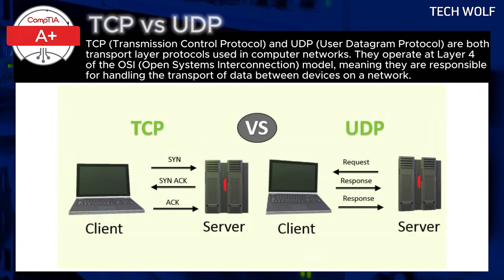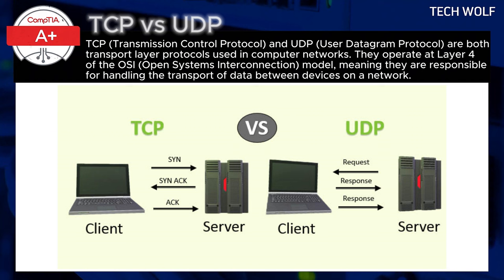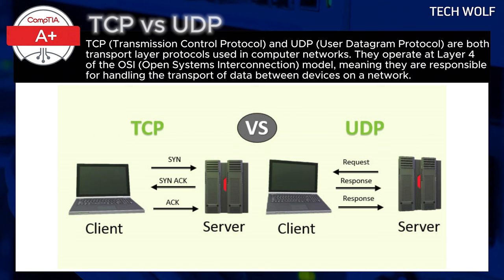UDP, or User Datagram Protocol, on the other hand, is a connectionless protocol. This means there is no handshake or formal connection setup before data starts flowing between two devices. UDP just sends packets, known as datagrams, to the receiver, but it doesn't check if they arrive in the correct order or even if they arrive at all. Because UDP doesn't have the overhead of setting up and maintaining a connection like TCP does, it is much faster, but also less reliable. There is no guarantee that the packets will arrive at the destination, arrive in the correct order, or won't be duplicated. UDP is sometimes described as a best-effort protocol, because it simply sends the data and leaves it up to the application or the receiver to handle any errors or missing data.